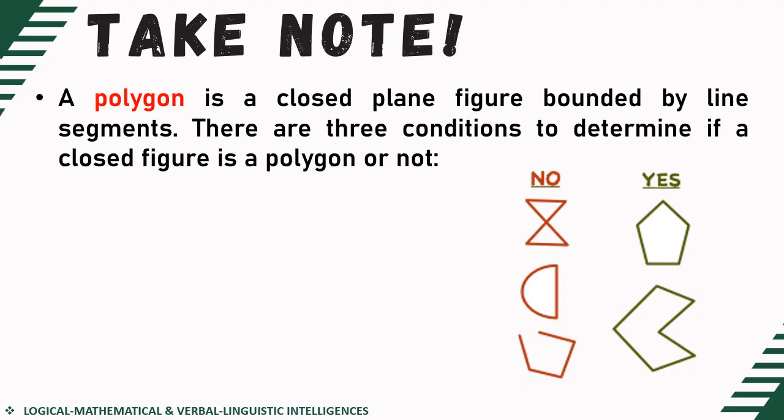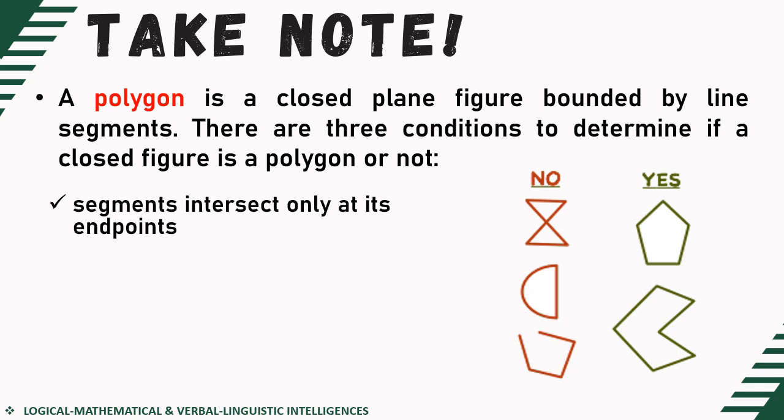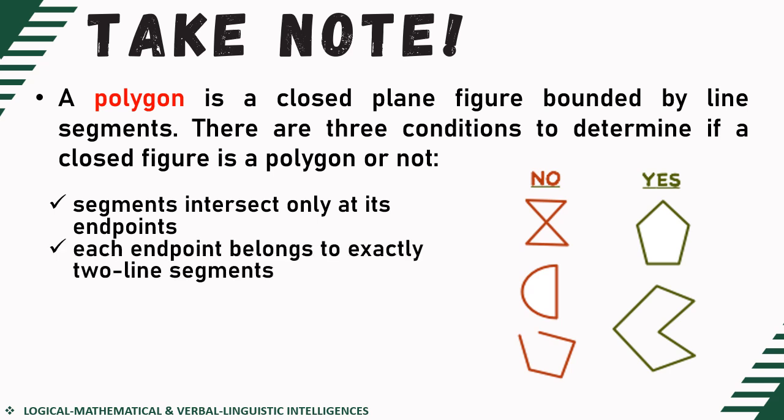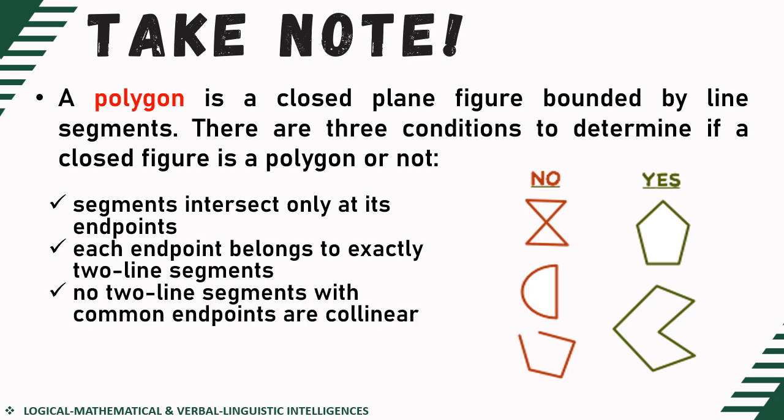First, let's define polygon. A polygon is a closed plane figure bounded by line segments. There are three conditions to determine if a closed figure is a polygon or not. First, segments intersect only at its end points. Next, each end point belongs to exactly two line segments, and no two line segments with common end points are collinear.